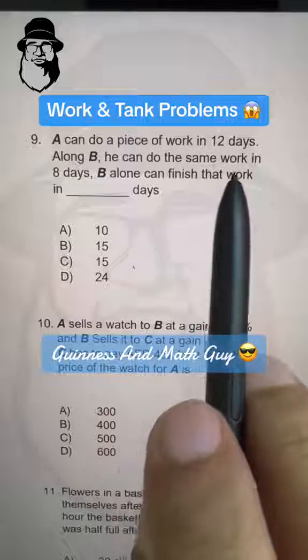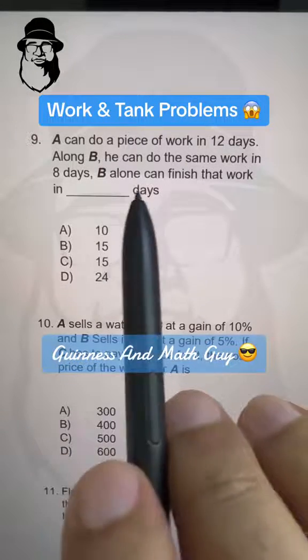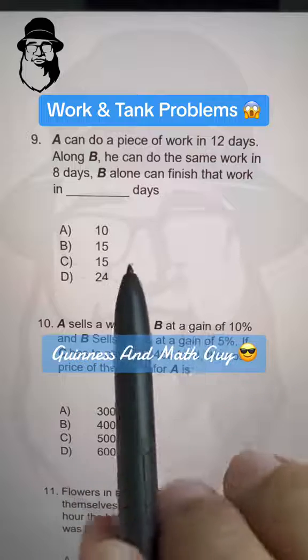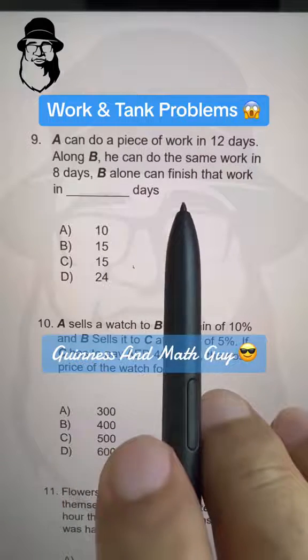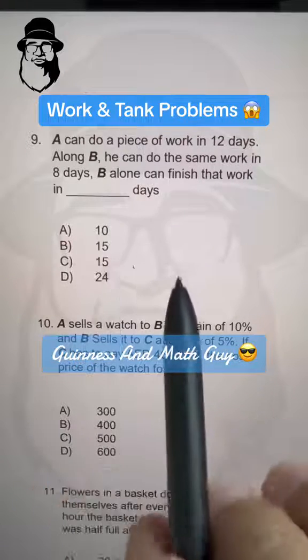A can do a piece of work in 12 days. Along B, he can do the same work in 8 days. B alone can finish that work in how many days.